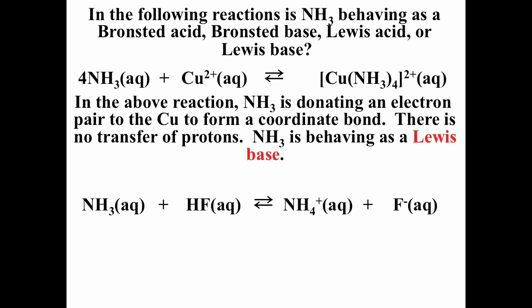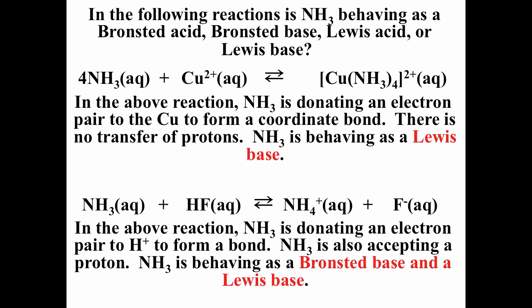In the reaction below, ammonia plus HF goes to the ammonium ion plus fluoride ion. Notice that we do have a transfer of hydronium ions — the hydrogen from HF is being lost to the ammonia, so HF must be a Brønsted acid. Ammonia is grabbing the hydronium ion, so ammonia is a Brønsted base. Ammonia also has that lone pair and uses it to grab the hydronium ion, so you can also think of ammonia as a Lewis base. In this reaction, ammonia is behaving like both a Brønsted base and a Lewis base.